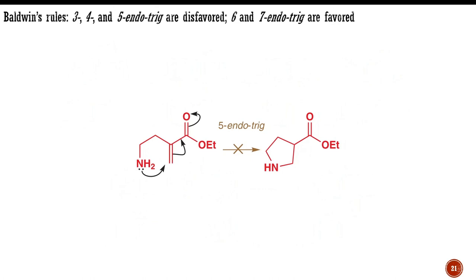3-, 4-, and 5-endo-trigonal cyclizations are disfavored; 6- and 7-endo-trigonal reactions are favored. The most important case in the endo-trigonal class is the disfavored 5-endo-trigonal reaction and, if there is one message you take away from this section, it should be that 5-endo-trigonal cyclizations are disfavored.